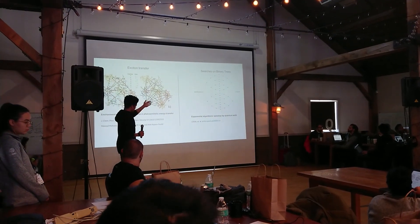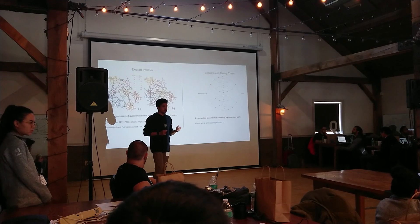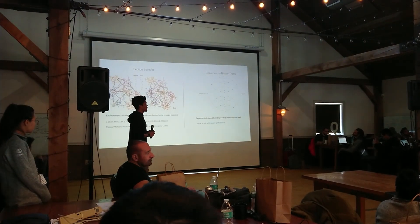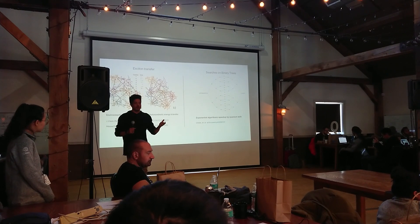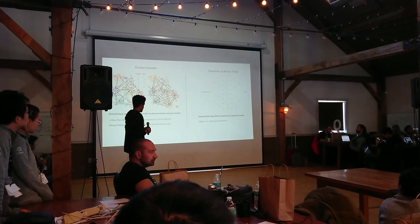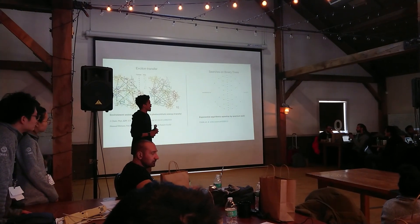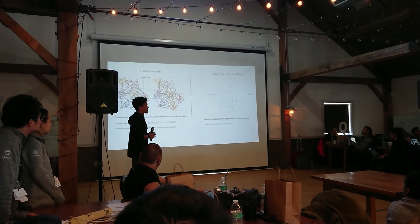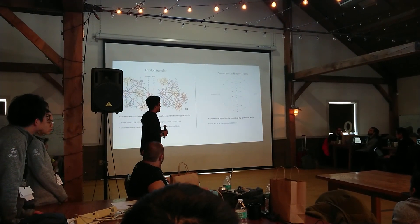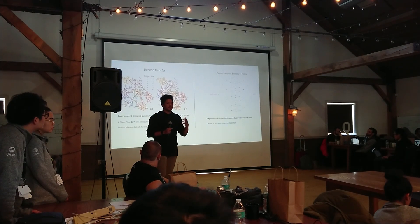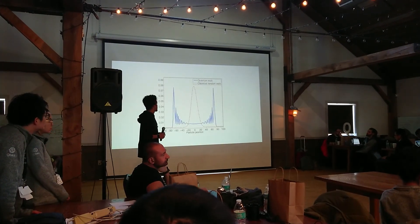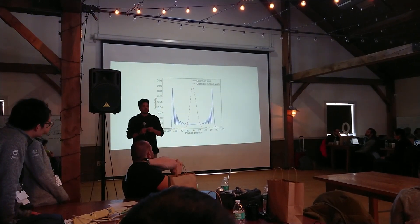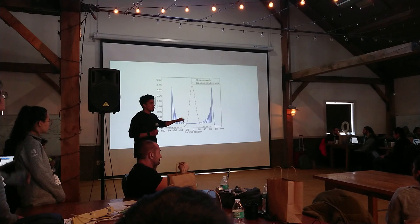A problem in computer science is searches on binary trees. There's a wonderful paper by Childs et al. that discusses using a quantum random walk on a tree to solve the structure of a black box using an oracle. You essentially query your oracle with one node, it gives you the nodes connected to it, and you use a quantum random walk to traverse the tree with the purpose of getting to the exit. On a classical computer using random walks on a lattice, there's no efficient solution — we often get stuck in the middle of the tree, because once you're in the middle there are many more paths that keep you in the tree than paths that get you out.